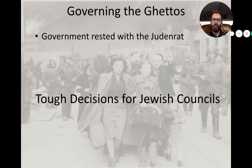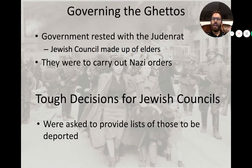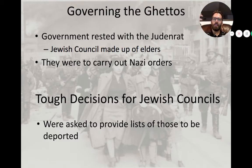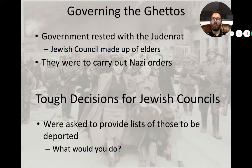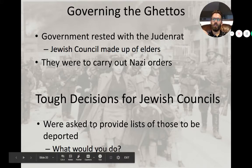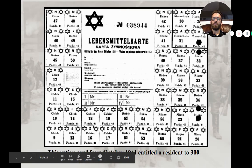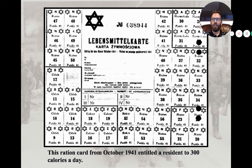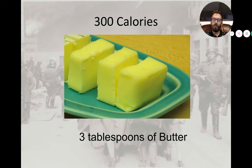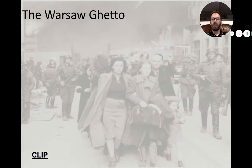The ghettos were managed through something called the Judenrat — councils where Jewish elders were put in charge. Similar to the Kapos in the camps, they carry out Nazi orders. The Nazis would go to the Judenrat and say 'we need a hundred people for deportation,' and they provide the list. Residents are given 300 calories a day — about three tablespoons of butter — while working 12, 14, or 16 hours a day on forced labor.